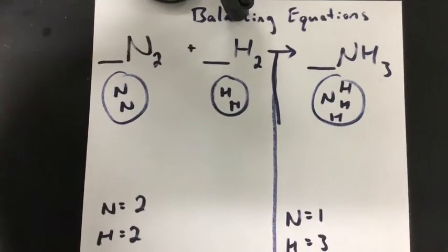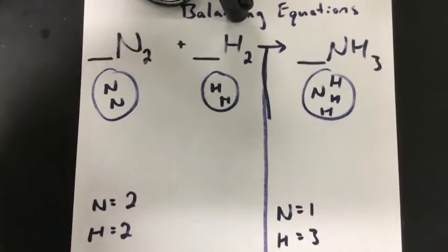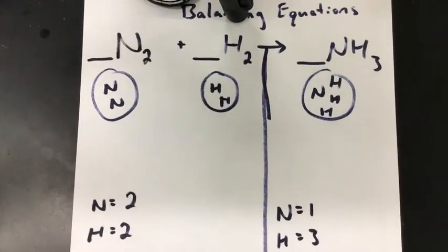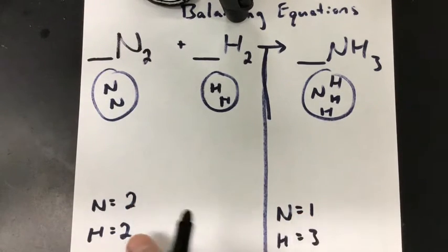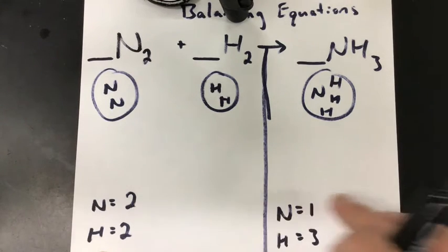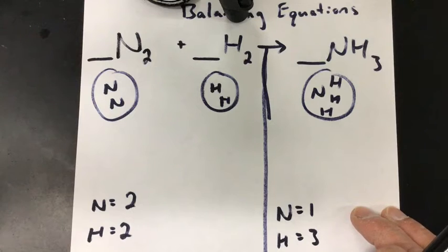Well, the law of conservation of matter tells us that they have to be the same. We can't have different numbers of each thing. I can't start with two and then go down to one. I can't start with two and go up to three. Whatever I start with, I have to end with.